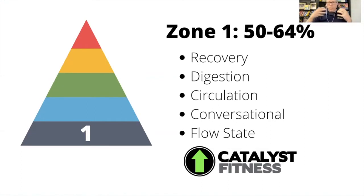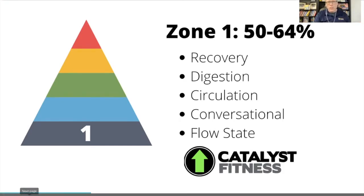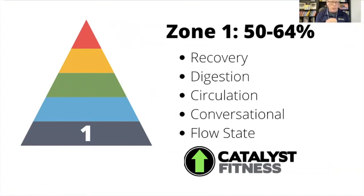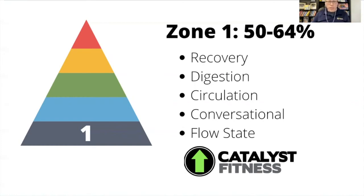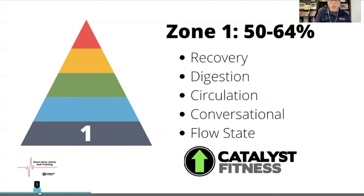Mowing the grass is a great zone one example, but some people are even in zone one taking a shower. The problem is that zone one is insufficient to create any real metabolic or health-saving benefit. Going shopping is zone one, but it won't create any long-term health or body composition changes. If someone is very overweight or out of shape, anything is better than nothing — but even moderate easy exercise for a fit person is actually zone two or three work for them.